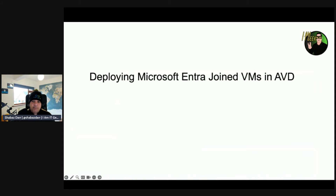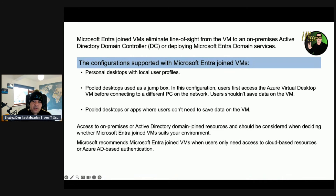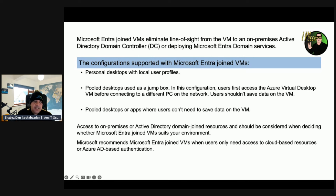Now let's talk about deploying Microsoft Entra joined VMs in AVD. This is an overview for deploying and accessing Entra joined VMs in AVD. The VMs can also be automatically enrolled into Intune when added to AVD. The configuration supports Entra joined VMs for personal desktops with local user profiles, and for pooled desktops — like a jump box. However, access to on-premises or Active Directory domain-joined resources should be considered when deciding whether Entra joined VMs suit your environment. Microsoft recommends Entra joined VMs when users only need access to cloud-based resources or Azure AD-based authentication.